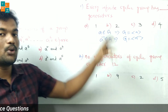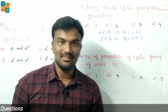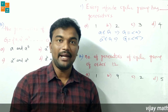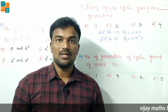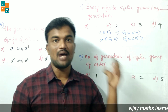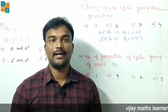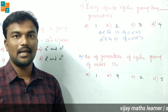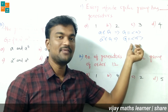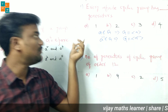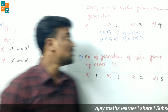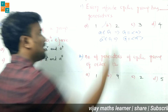An infinite cyclic group has only two generators. For a finite cyclic group, the number of generators depends on the order of the elements of the group. But an infinite cyclic group has only two generators: ⟨a⟩ and ⟨a inverse⟩. If b belongs to G, then ⟨b⟩ and ⟨b inverse⟩. So option B is the correct answer.